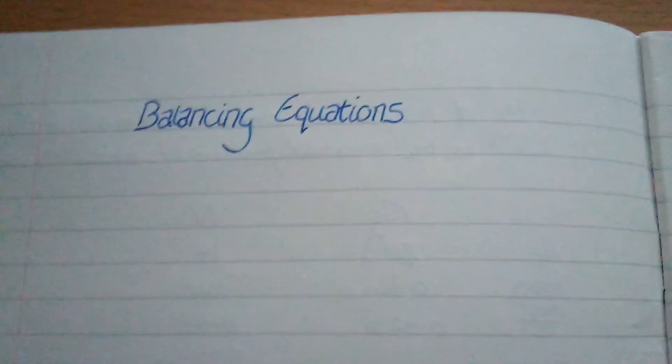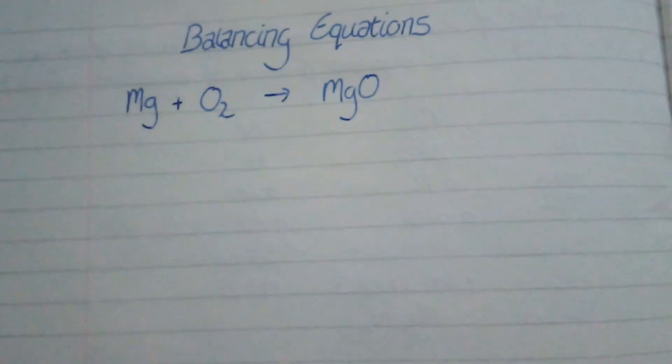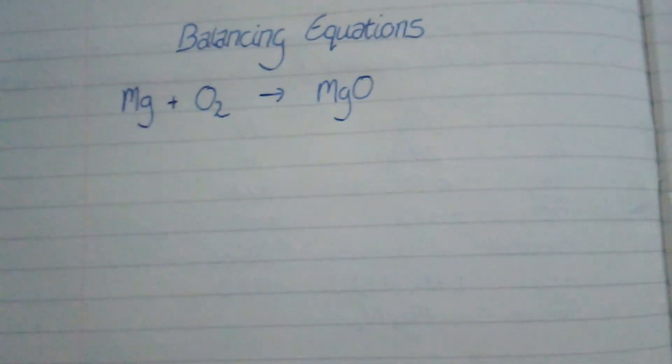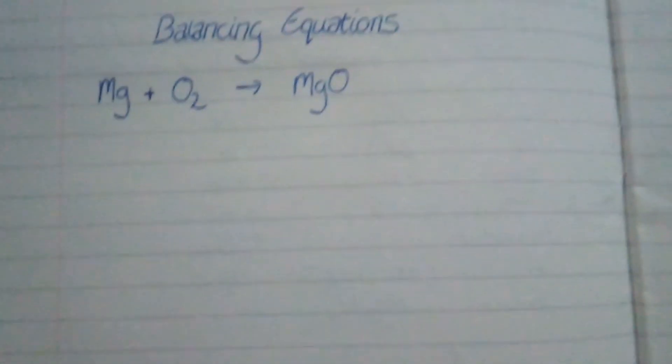So here we go. Balancing equations. And the first equation I'd like to look at is making magnesium oxide.